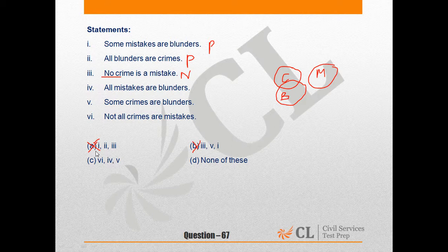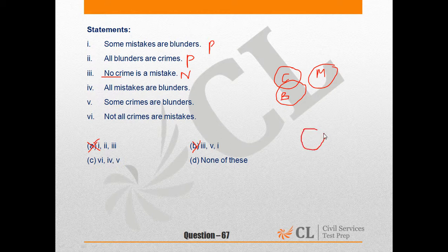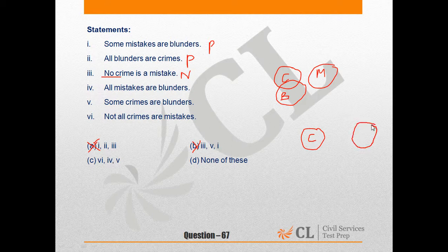Option C. Statement 6 says not all crimes are mistakes. Now this can be interpreted in two ways. One, some crimes are not mistakes, or no crime is a mistake. Let's take the second scenario, which is a possible scenario. Not all crimes are mistakes.